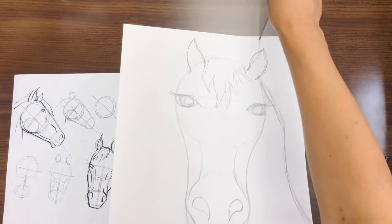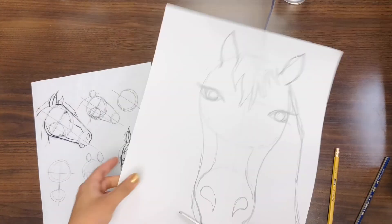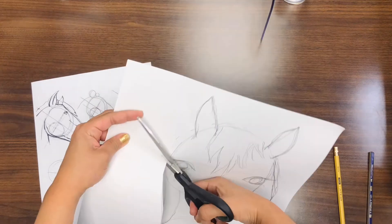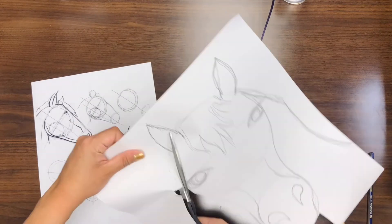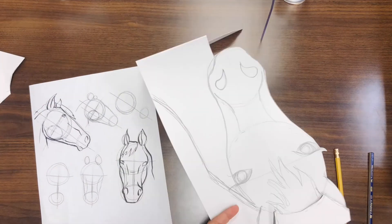When you are finished with your horse drawing, you will need scissors and you will carefully cut right along the outside line of your horse drawing. Be careful not to cut off the ears or part of the neck.